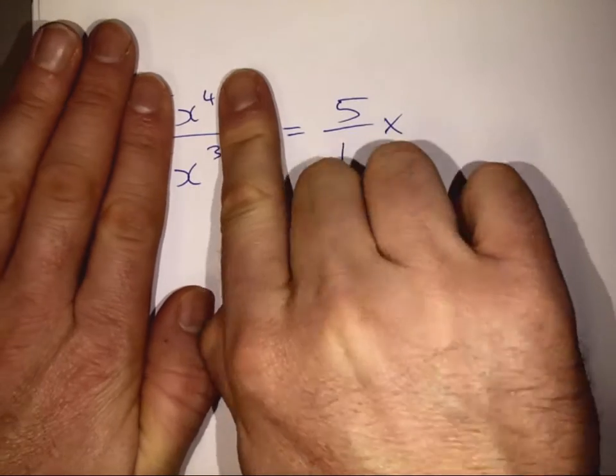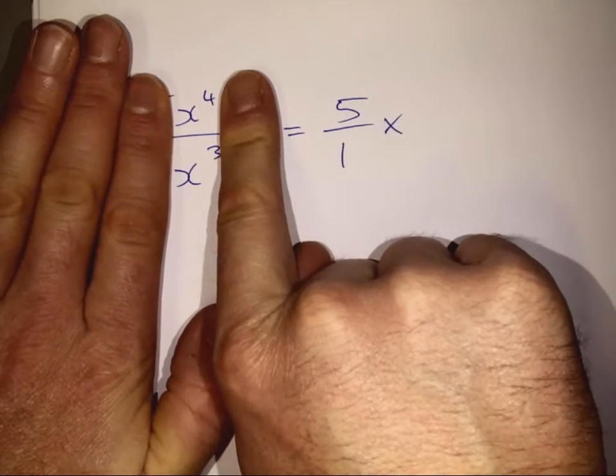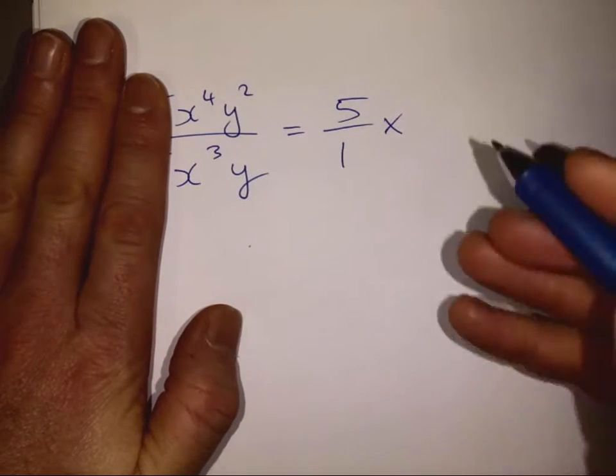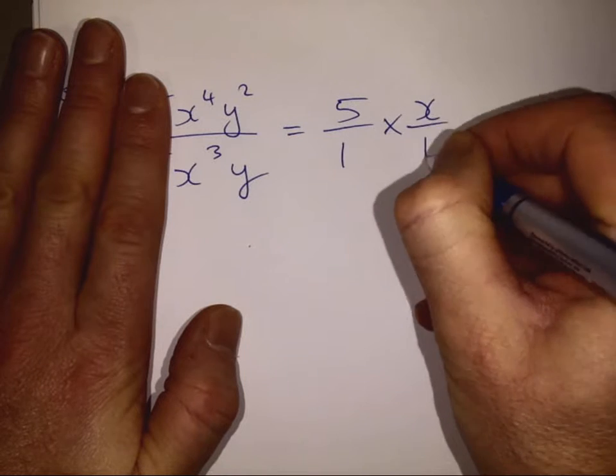And looking at the x's. We're dividing, so we subtract the powers. So we're left with x to the power of 1 on top, or just x over 1.